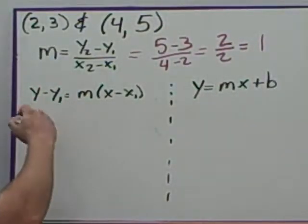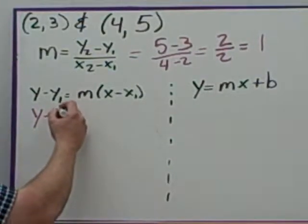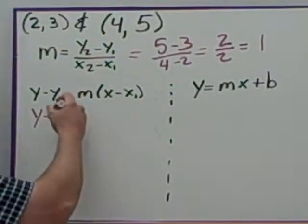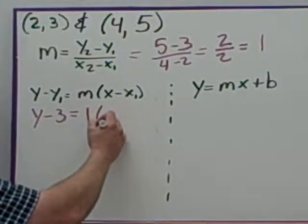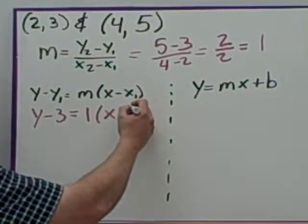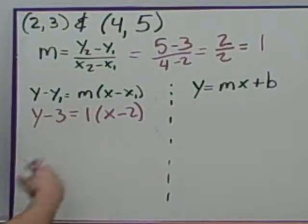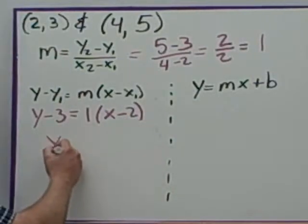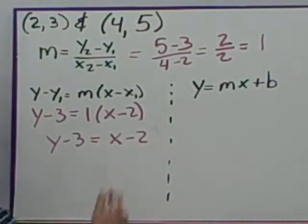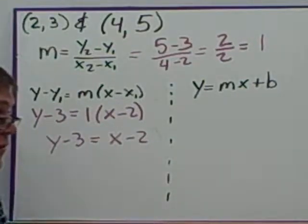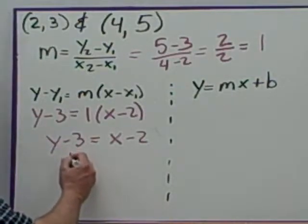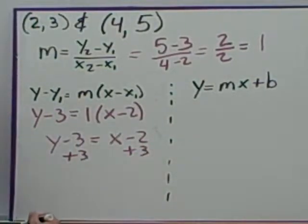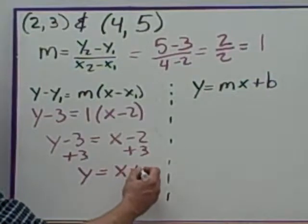Now I know the slope is 1. Using point-slope form with the first point, I write y minus 3 equals 1 times x minus 2. Since 1 times anything is itself, this simplifies to y minus 3 equals x minus 2. If asked for slope-intercept form specifically, add 3 to both sides and you get y equals x plus 1 — there's your final answer in mx plus b form.